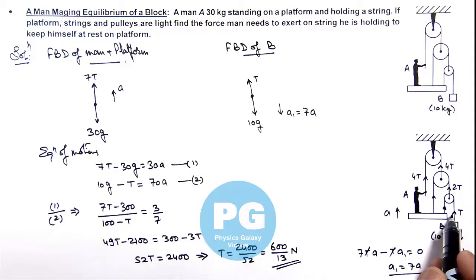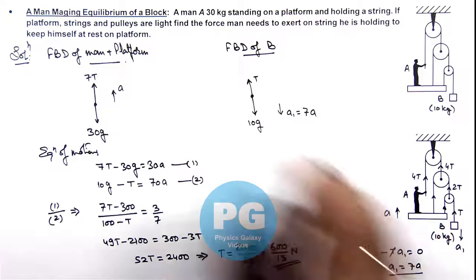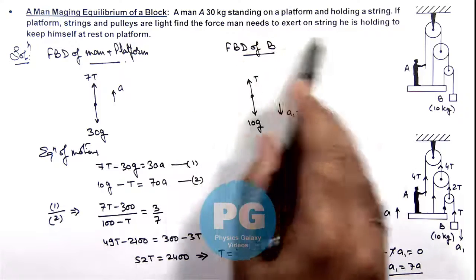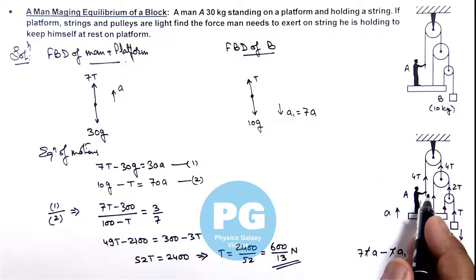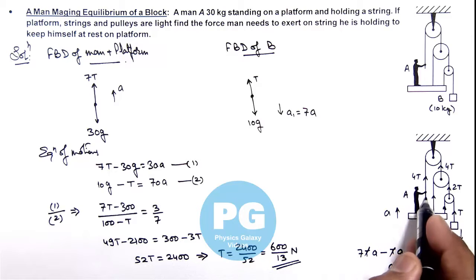So if we calculate the force acting on the string by the man, we are required to find the force man needs to exert on string. So force which man needs to exert on string is 4T. So here the value of force man is exerting on the string.